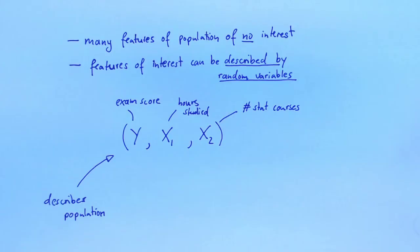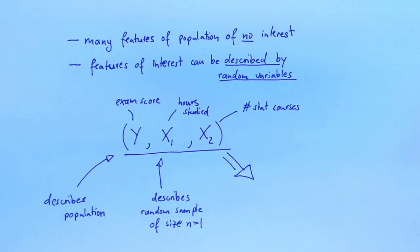As we already discussed, Y, X1 and X2 also describe a random sample of size 1. In statistics, the only relevant property of a population is how it produces samples. This leads us to a more abstract definition of a population. We define a population to be something that we can draw samples from and where the samples can be described by random variables. In our case here, by random variables Y, X1 and X2. We then say that the joint distribution of the random variables is the population.